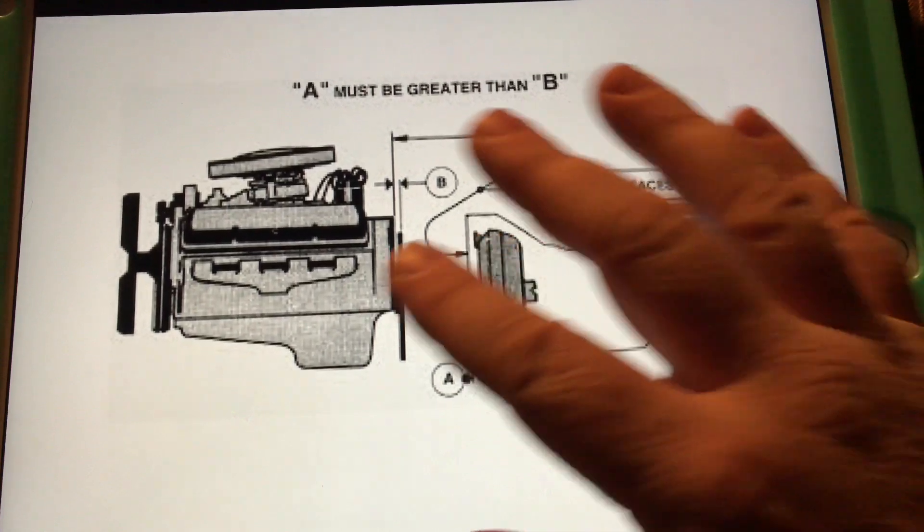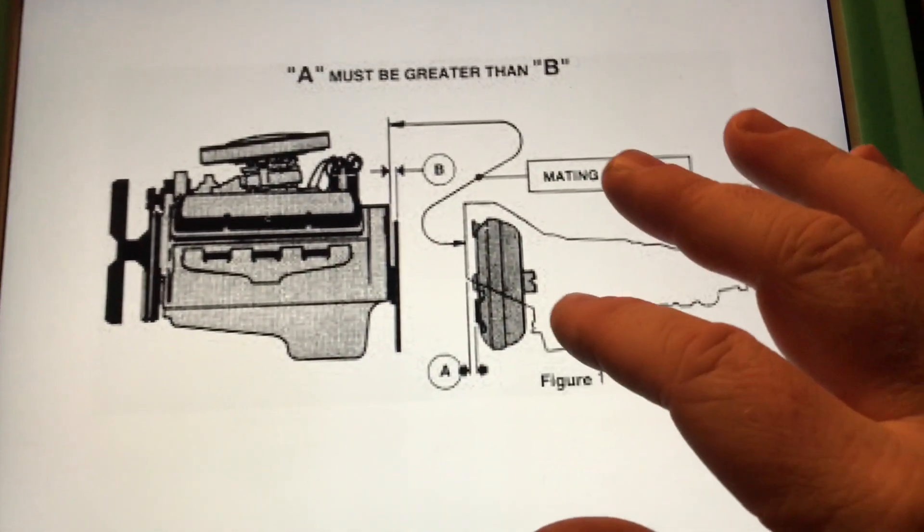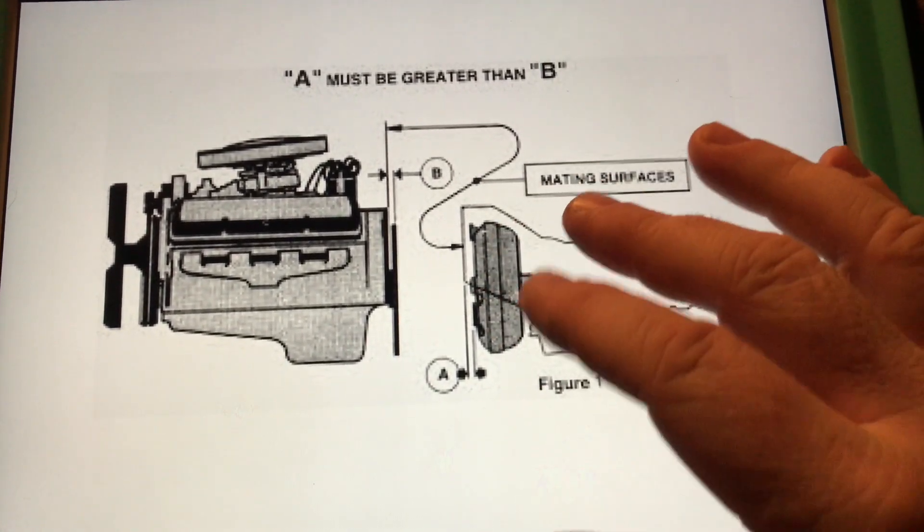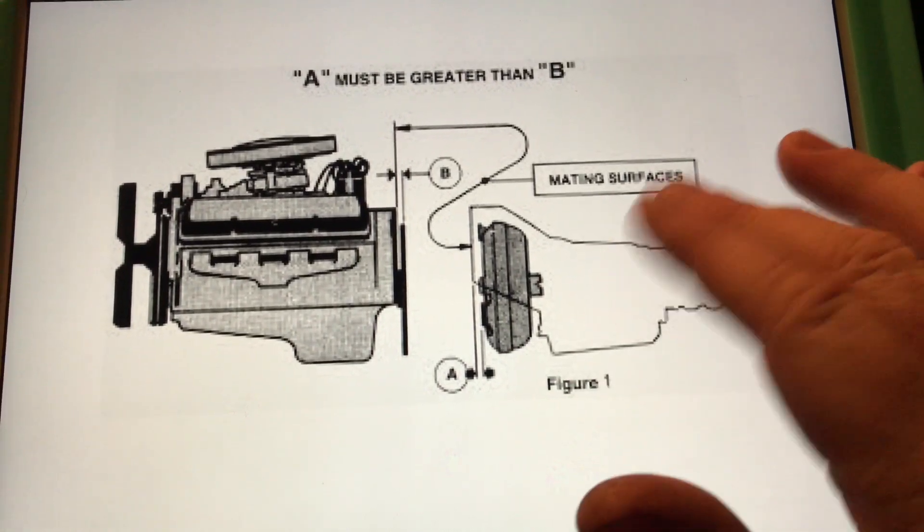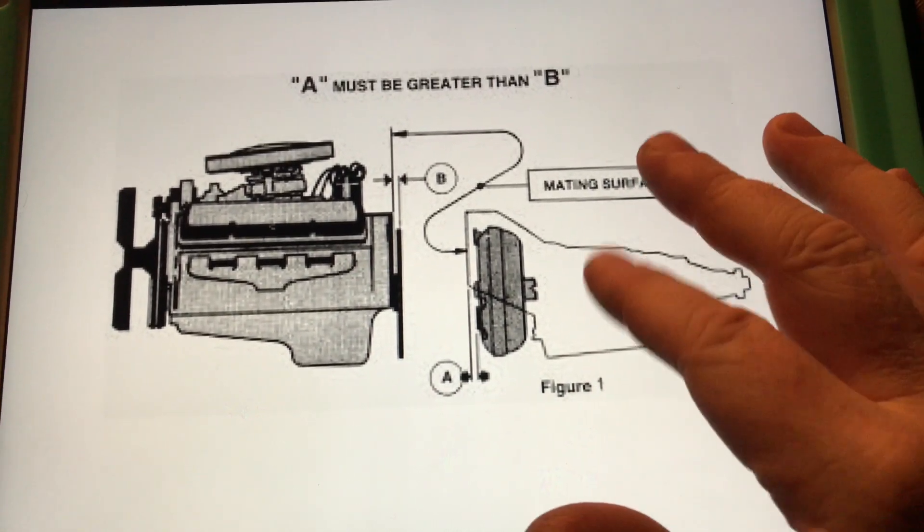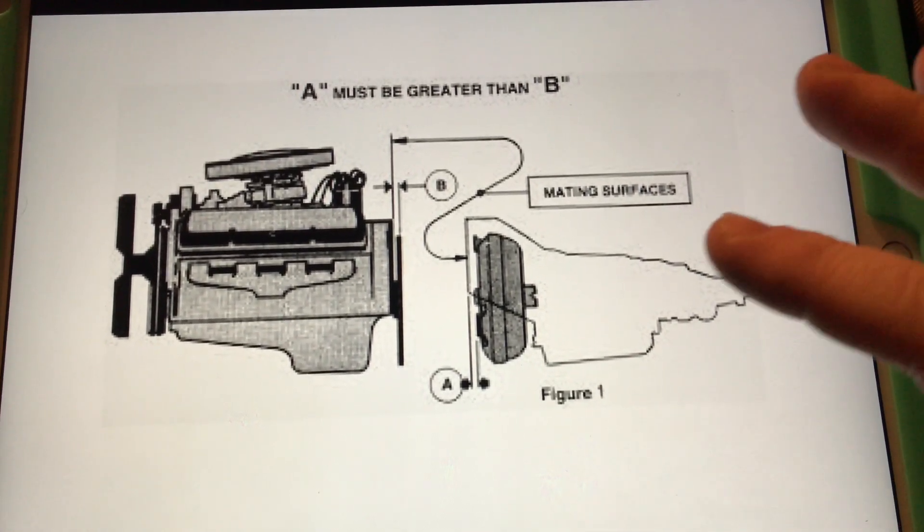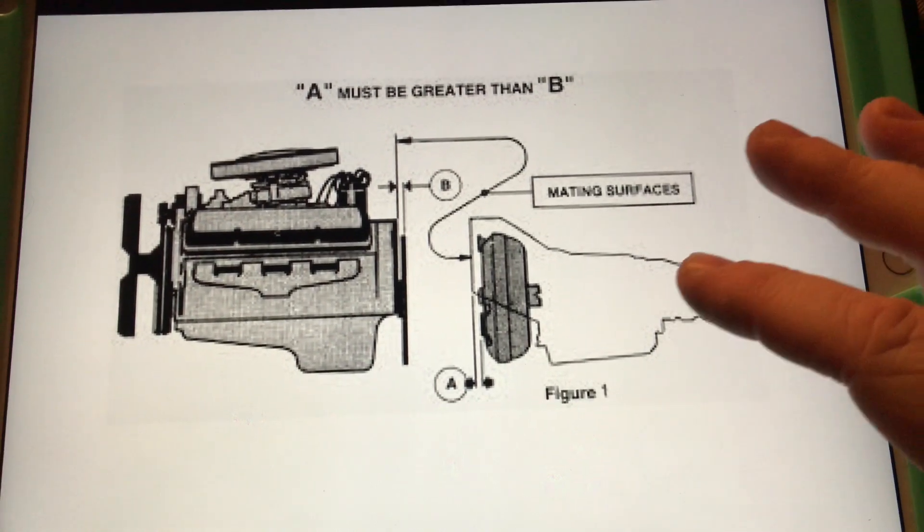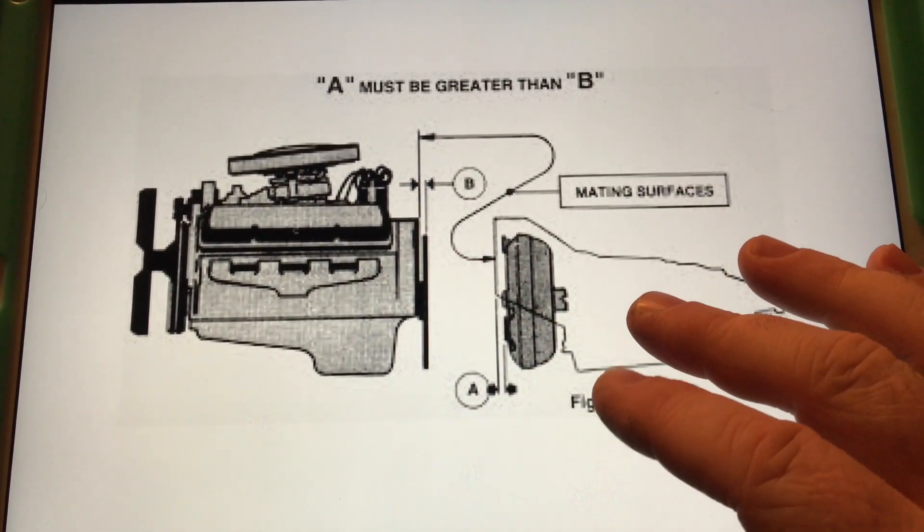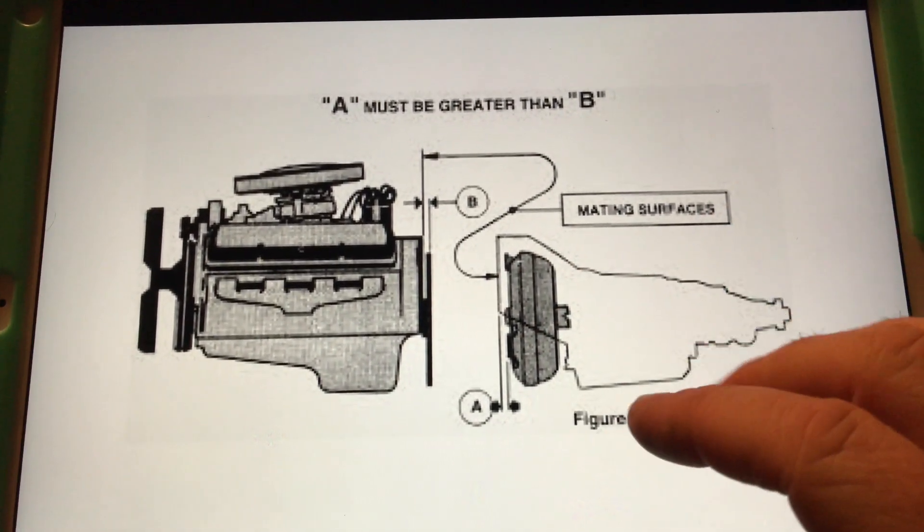Some people would prefer to put the entire late model GM drivetrain into the vehicle, and I get it. Yeah, you'll have the overdrive transmission. You'll have the electronically controlled shifting and all of that. But you'd have to modify a whole lot of other things. You may have to modify the cross member on the car. You definitely have to modify the rear driveshaft, possibly the length to have it rebalanced. And just getting through an LS swap is enough of a task by itself without having to worry about changing all those other things. So here's the plan.